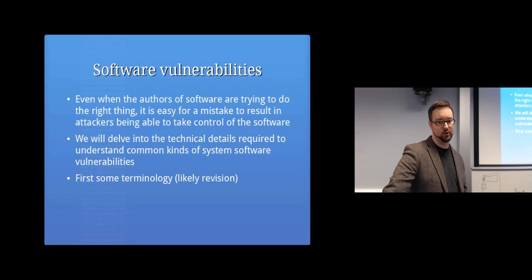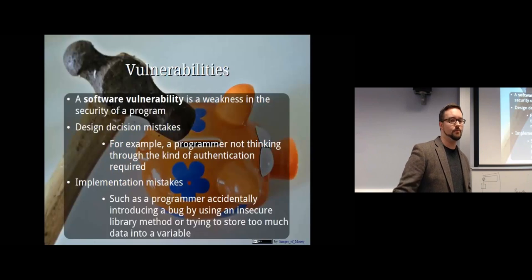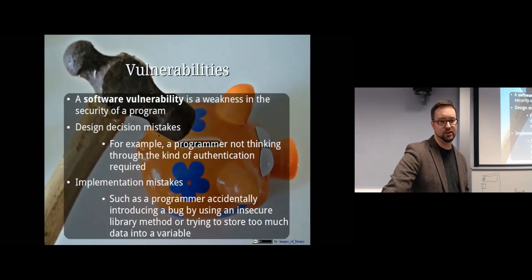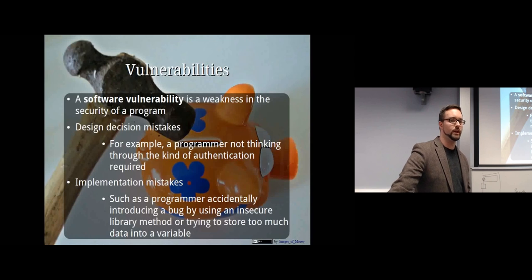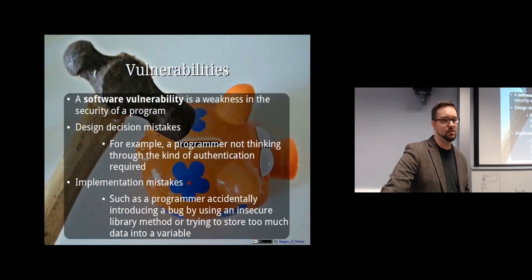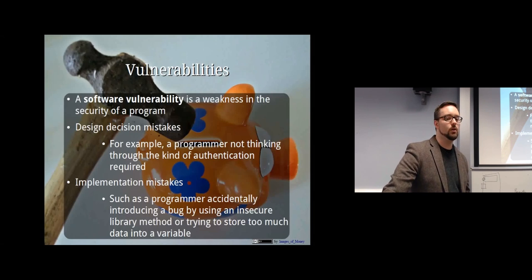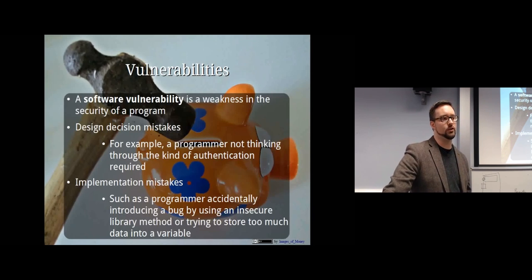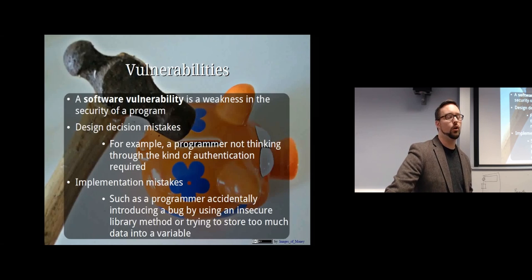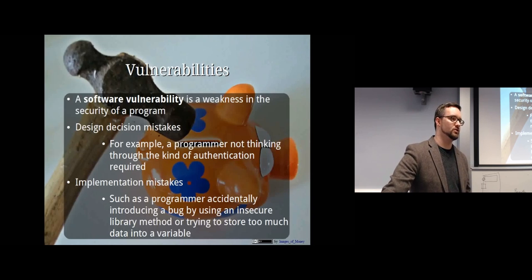So how do we go about understanding the kinds of programming mistakes that get made? Some basic terminology - a software vulnerability is a weakness in the security of a program. Often that's a design decision mistake or an implementation mistake. They just haven't thought through the solution properly, or they've made a mistake while implementing it - a little programming mistake.